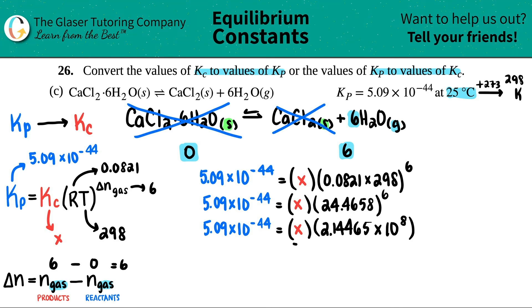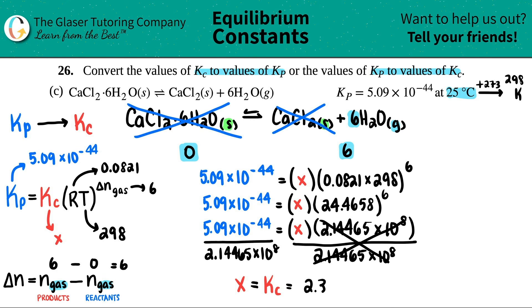And now I want to solve for the X. So I get rid of the 2.14465 times 10 to the eighth. Divide it on both sides. 2.14465 times 10 to the eighth. This goes bye-bye. And remember, the X was equal to the Kc. So this equals the Kc. And then let's find out what that number is. So 5.09 times 10 to the negative 44th, divide it by this big number. And I'll leave it at three sig figs because this is the actual number. 2.37 times 10 to the negative 52.